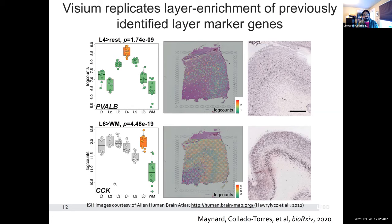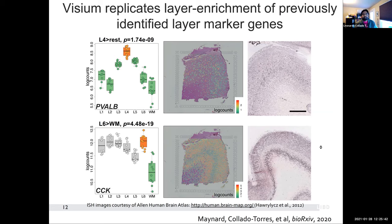Similarly, we can do this for other genes. For example, CCK shows a strong difference between layer six and white matter. It's also expressing in other layers, so at the spot level plot it looks like it's expressing in a lot of places. But it has a big contrast between white matter where it's mostly not as expressed and layer six, which is highly expressed. Up until now, we're just validating previous knowledge.